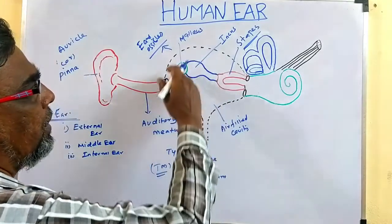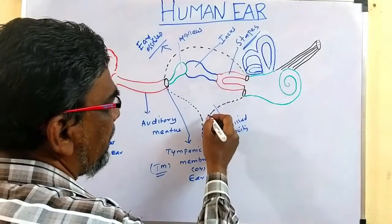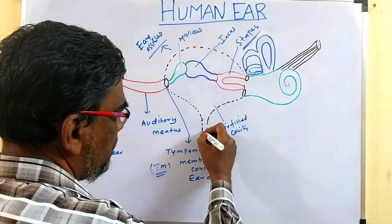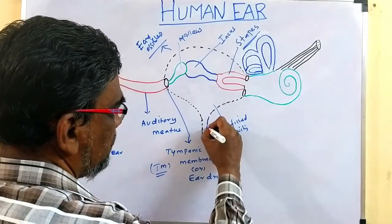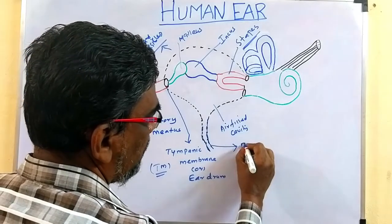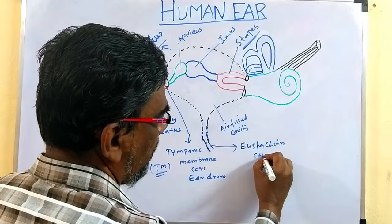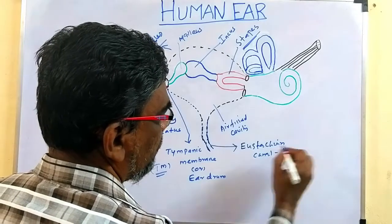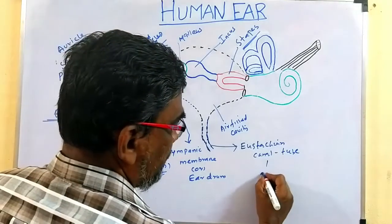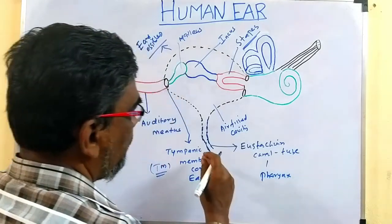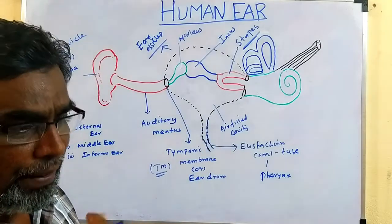These three bones are present in the middle ear. From the tympanic cavity, one tube goes to the pharynx. It is called the Eustachian canal or Eustachian tube. The use of this tube is to release excess air to the pharynx.